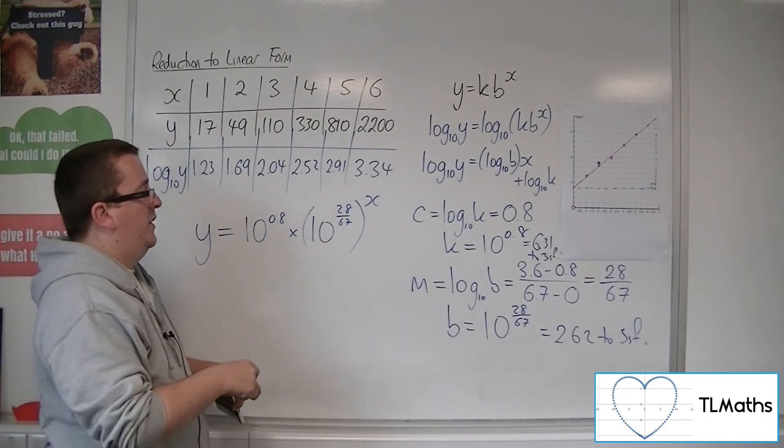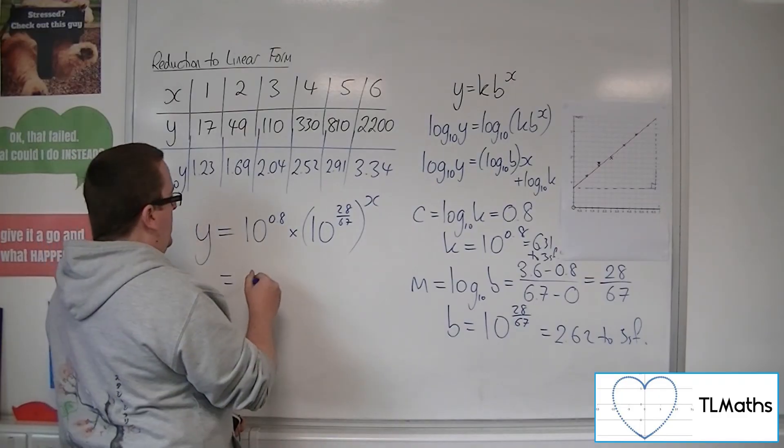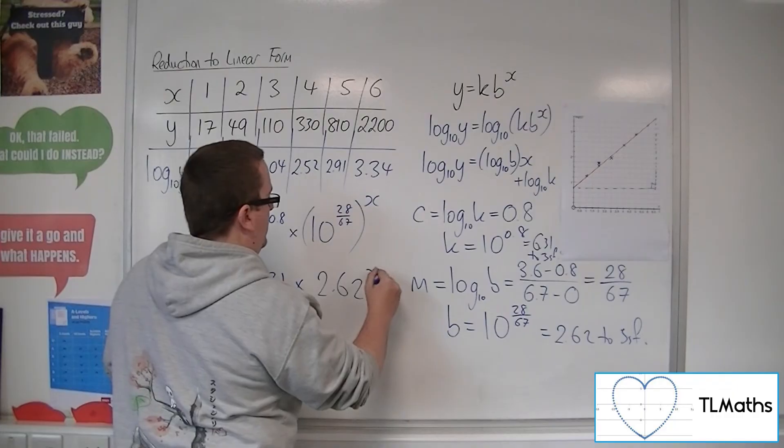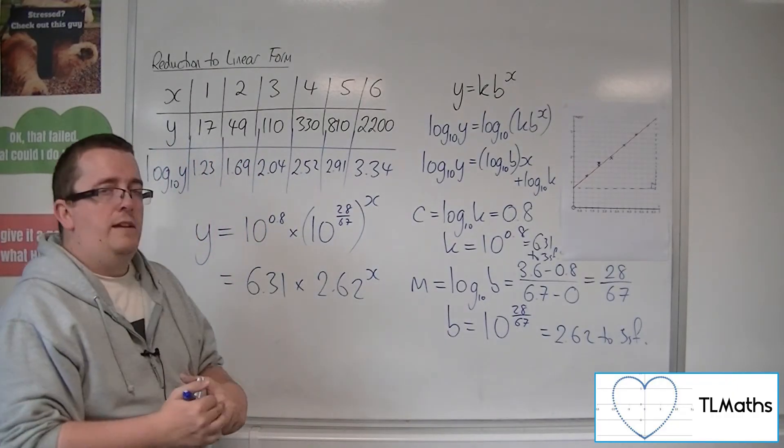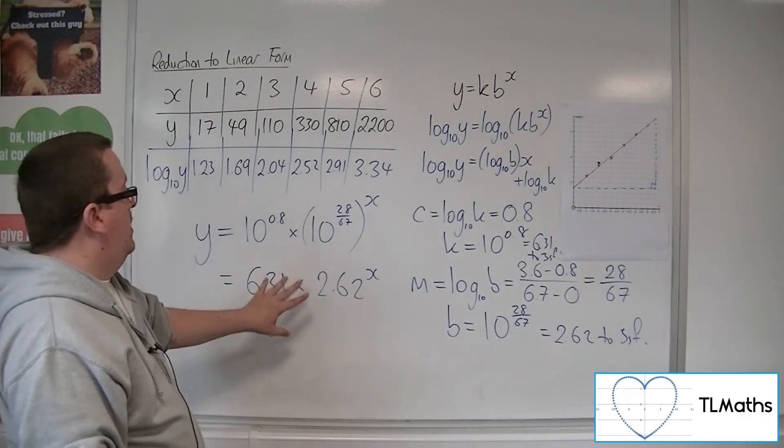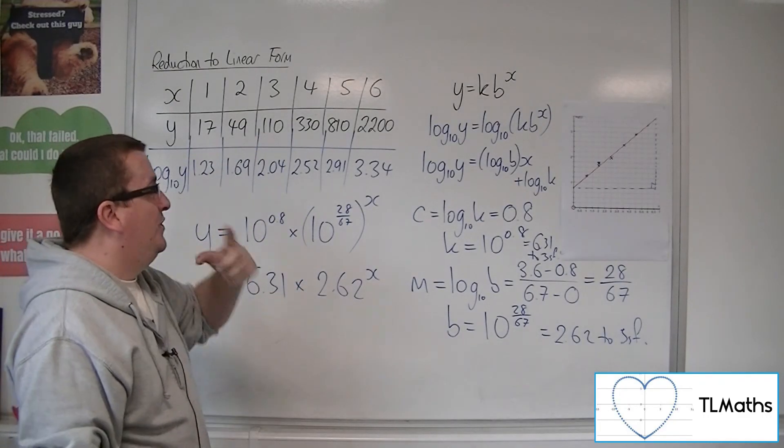And that's the equation. I mean, you could write it, if you were going to write it to 3 sig fig, as 6.31 times 2.62 to the x. But that is the graph, that's the function that would fit the original data best.